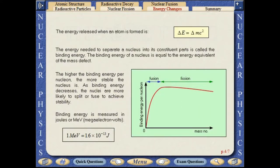The energy needed to separate a nucleus into its constituent parts is called the binding energy. The binding energy of a nucleus is equal to the energy equivalent of the mass defect. The higher the binding energy per nucleon, the more stable the nucleus is.